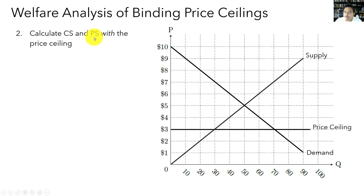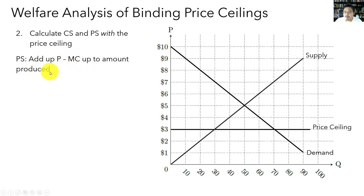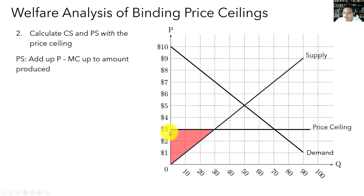Step one: calculate consumer and producer surplus without the price ceiling. At the equilibrium price, consumer surplus is the triangle below the demand curve and above the price: base = 50, height = 5, so CS = ½ × 50 × 5 = $125. Producer surplus: base = 50, height = 5, so PS = ½ × 50 × 5 = $125. Total surplus = $125 + $125 = $250. Step two: calculate CS and PS with the price ceiling. Producer surplus first — at the price ceiling, only 30 units are produced. PS = ½ × 30 × 3 = $45.